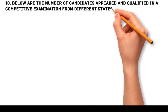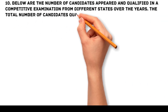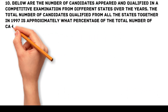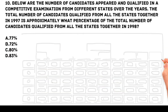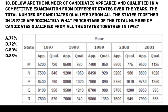Problem 10: Below are the number of candidates appeared and qualified in a competitive examination from different states over the years. The total number of candidates qualified from all the states together in 1997 is approximately what percentage of the total number qualified from all states together in 1998? Options: a. 77%, b. 72%, c. 80%, d. 83%.